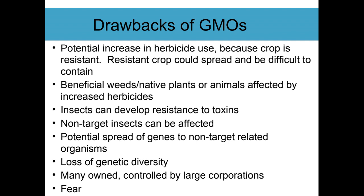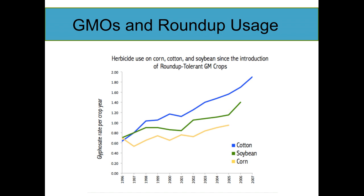A lot of GMOs are actually developed by scientists in universities and more like nonprofits, so you shouldn't assume every single GMO is being owned by a large corporation. As we talked about, pesticide usage has decreased, but Roundup herbicide usage has increased as these GMOs have increased — pesticide use has gone down but herbicide use has gone up, and that's something farmers are starting to take into more consideration. We're going to stop here, and we will pick up with more biotechnology in the next presentation.